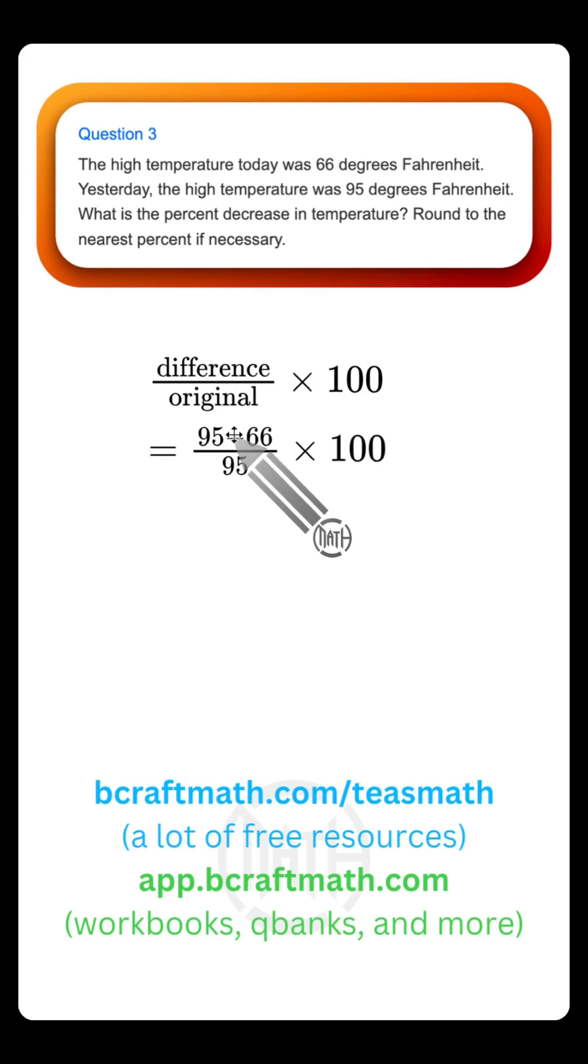So taking that difference, that means we want to subtract. Basically, what you're finding here is how much that temperature changed from yesterday to today. But the original here is what really gets students because they get these two values mixed up. The original is not always going to be the second value. The original might be the first value. It depends on how it's worded, which is why I mentioned think about it in terms of being the older value.